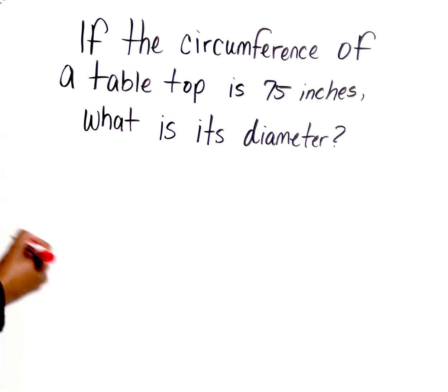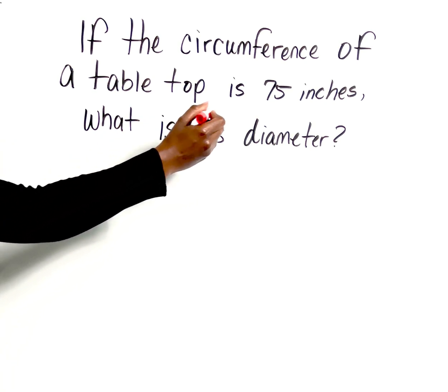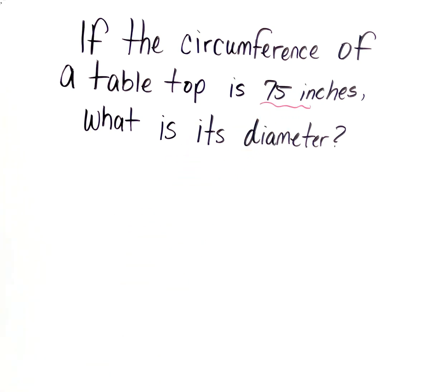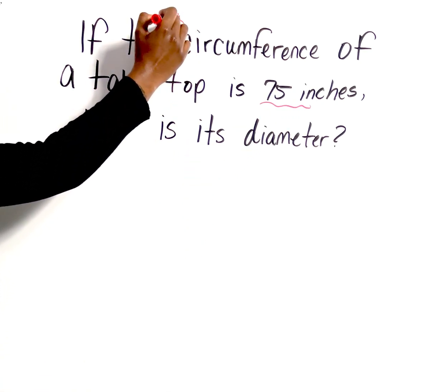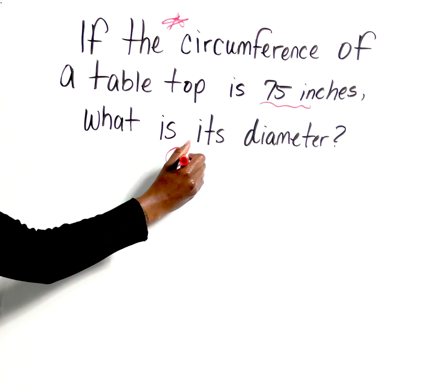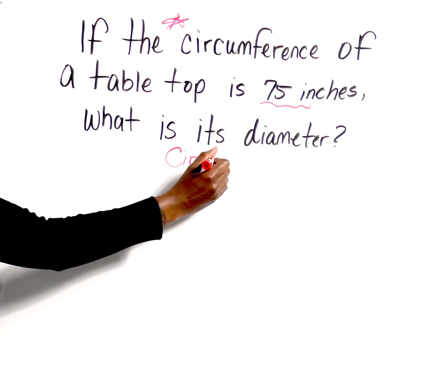So they give us 75 inches, and what is that describing? That's describing the circumference. And we know that anytime we have circumference, we're dealing with a circle.